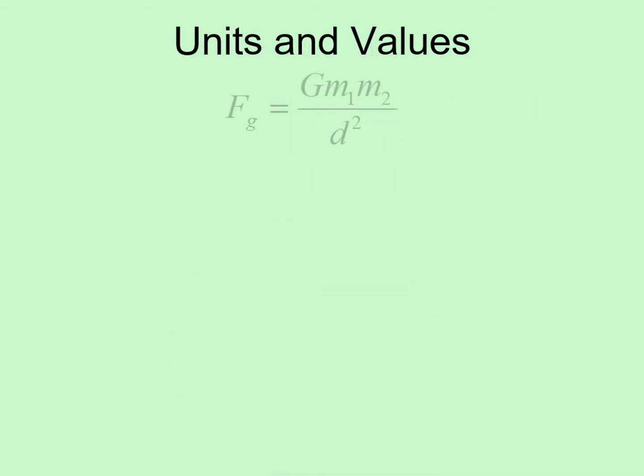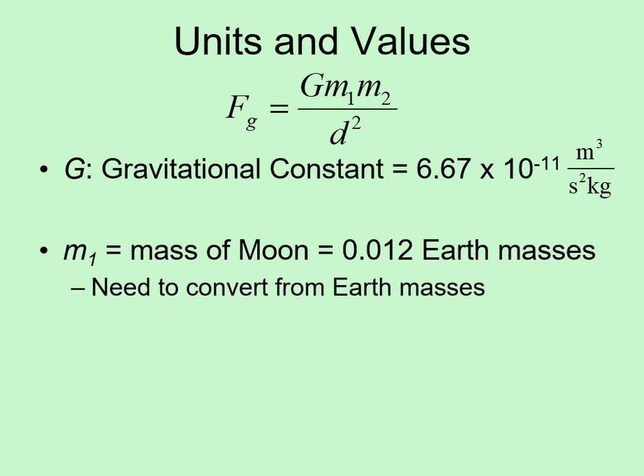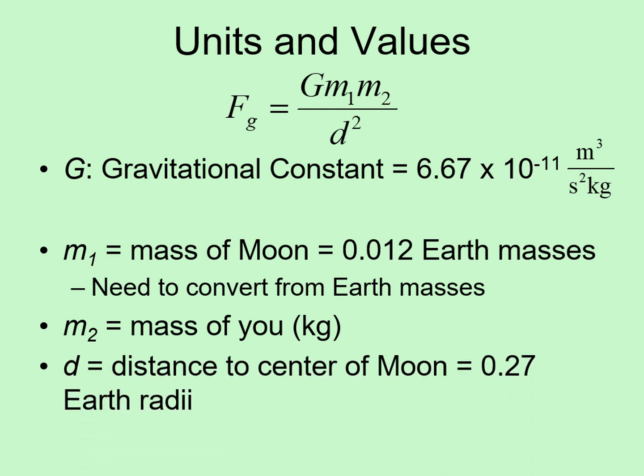So let's remind ourselves what needs to go into the gravity formula. We need the gravitational constant, which is always the same. We need the mass of the moon in kilograms. Since it's currently in Earth masses, we'll have to convert to kilograms. We need to have our mass in kilograms. And we need the distance from the center of us to the center of the moon. If we're standing on the moon, this will be the moon's radius in meters. Once again, we'll need to convert from Earth radii to meters.